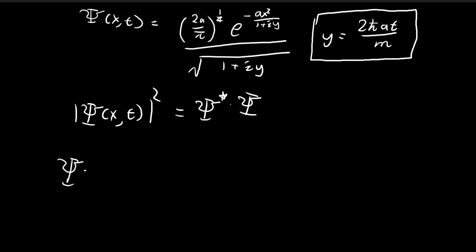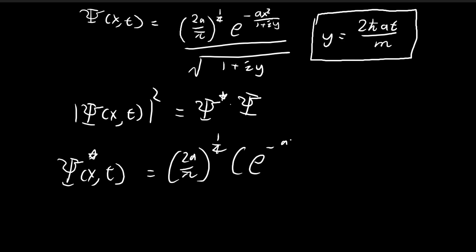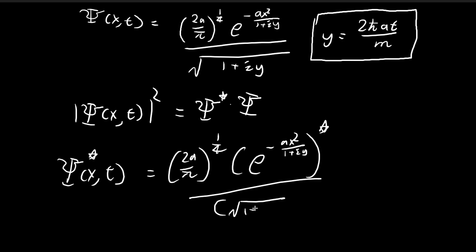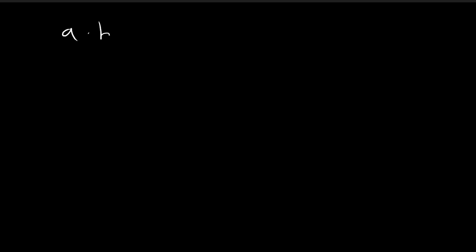When we are trying to take the conjugate of this whole term, we're looking for the individual conjugates of these two terms — the numerator and denominator. The conjugate of a product a times b is equal to the conjugate of a times the conjugate of b. And the conjugate of 1/z equals 1 over the conjugate of z.